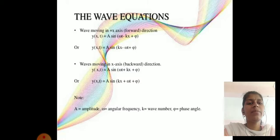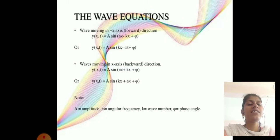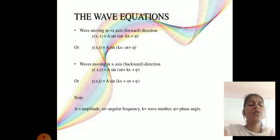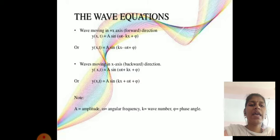For a wave moving in the negative x-direction: y(x,t) = A sin(kx + ωt + φ). Here A is amplitude, ω is angular frequency, k is wave number, and φ is phase angle.